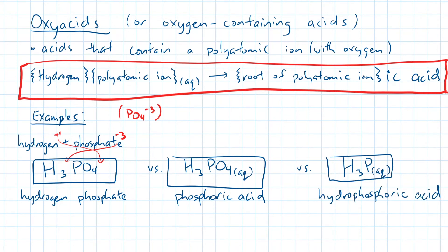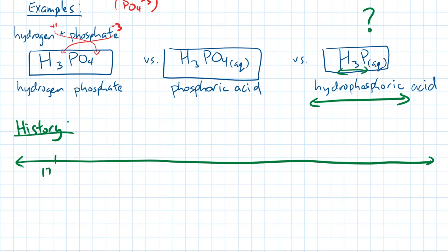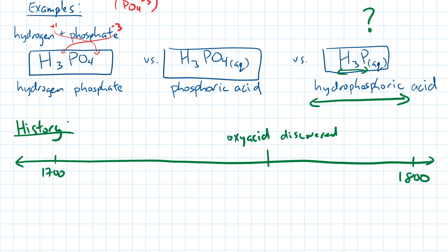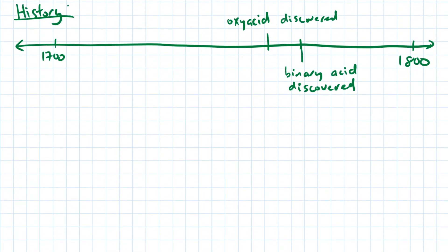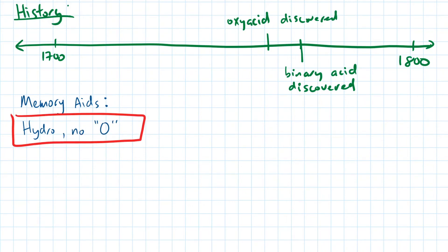This is rather confusing — why does the smaller compound get the longer name? The answer is history. Oxyacids were discovered first, and binary acids were discovered almost a decade later, forcing a new naming system for binary acids, which unfortunately was also a longer name. Here's a good memory aid: hydro, no O. If you see hydro in the name, there is no oxygen in the acid, like hydrochloric acid.